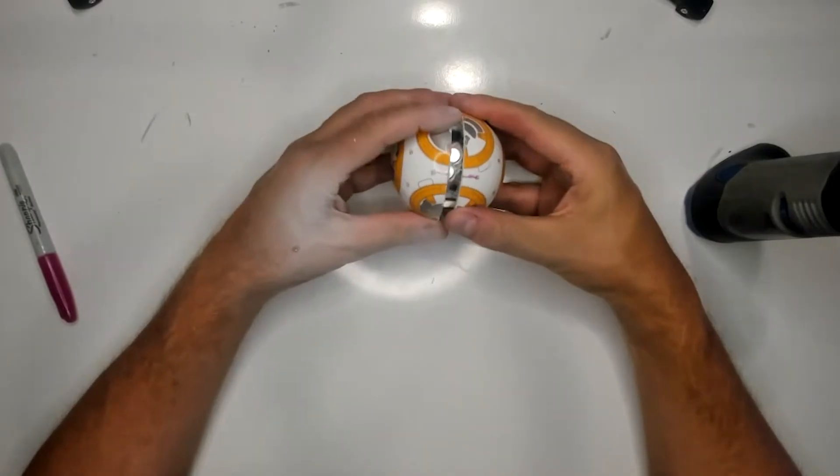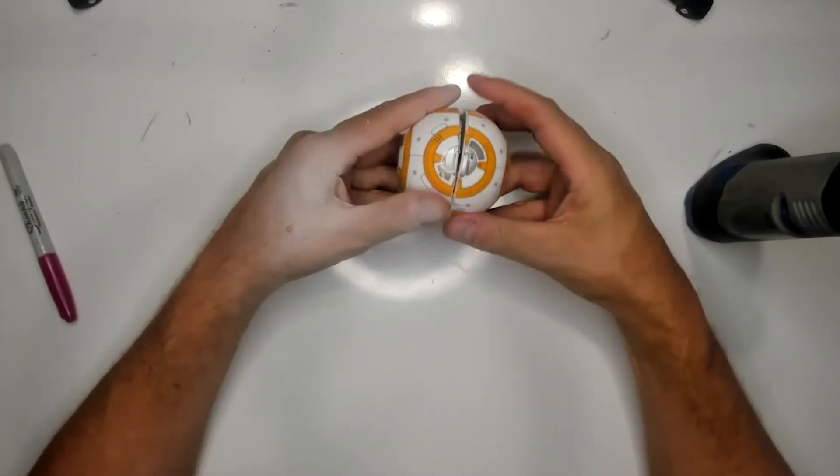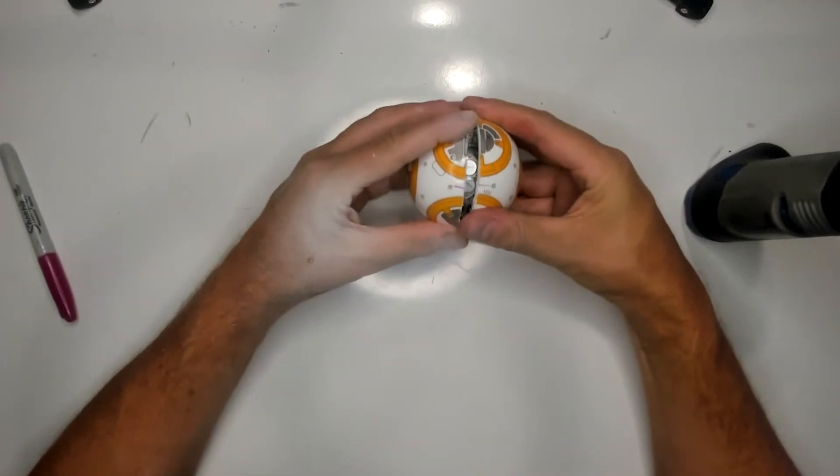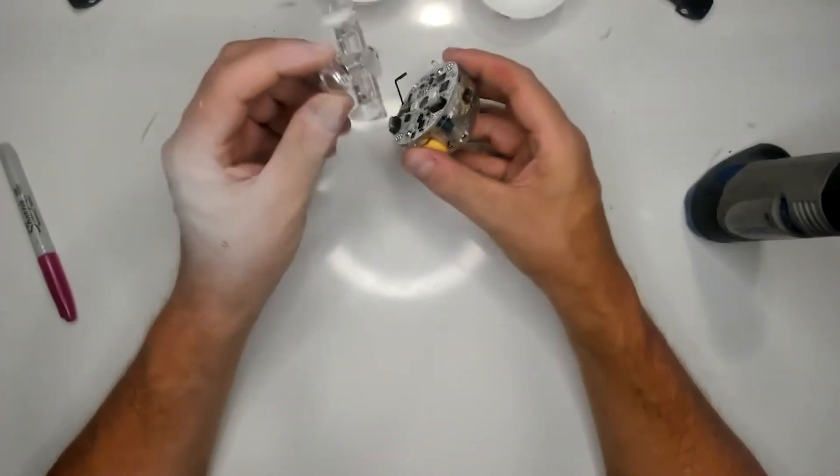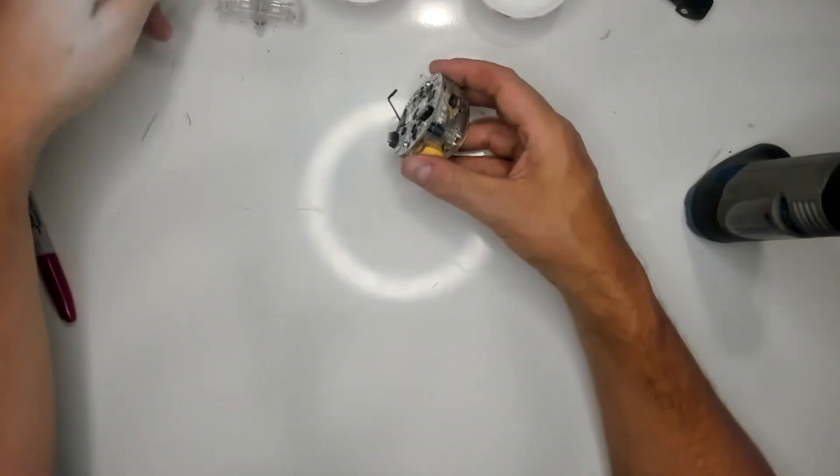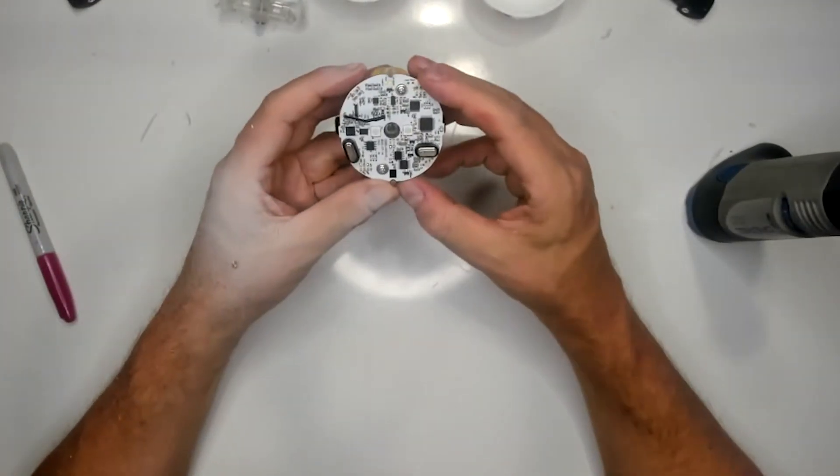Well, the moment of truth. It's time to pull the little guy apart. The plastic piece that the head attaches to has magnets at the top and it just comes right off without any screws.